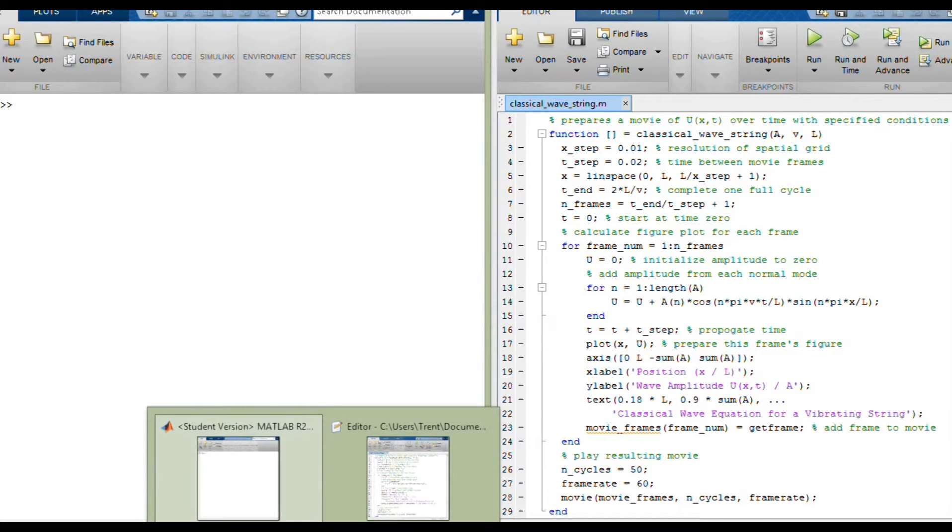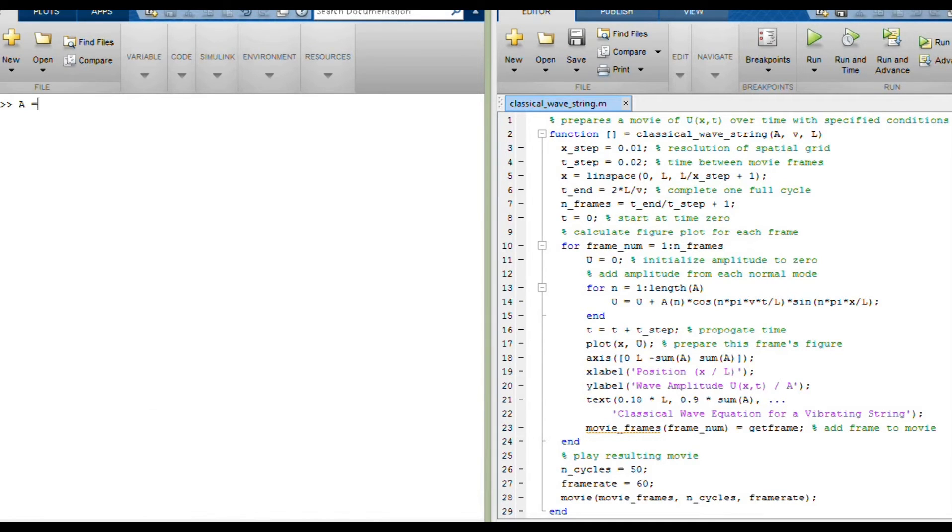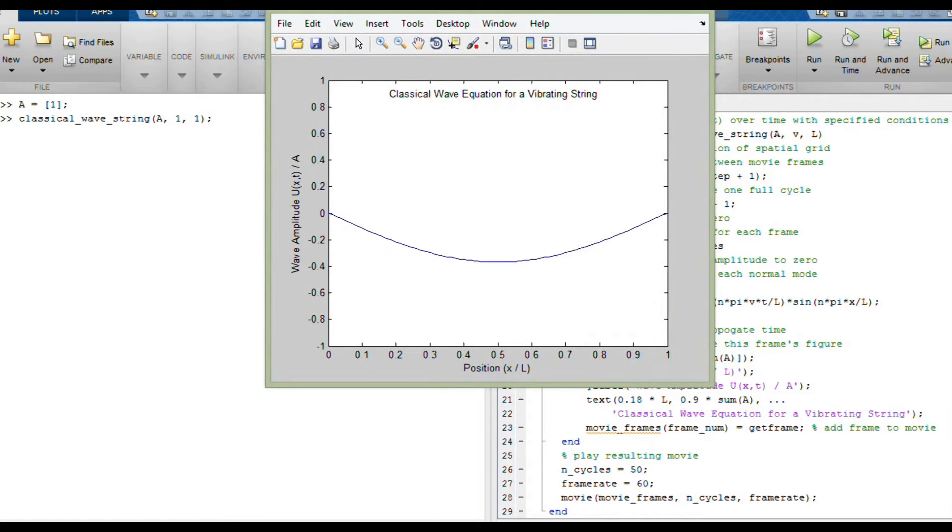So let's take a look at some examples. To start off with, let's just look at the first fundamental mode here, the first normal mode. Let's set that equal to 1 for its amplitude. And then I'm going to call this function classical wave string. I'm going to do A, velocity I'm just going to pick 1, and length I'm just going to pick 1. So let's see what that looks like.